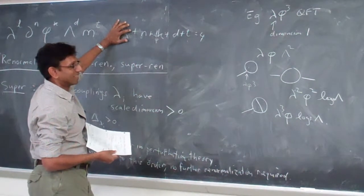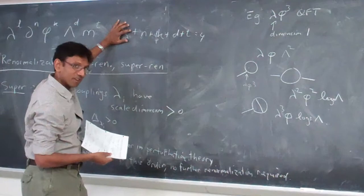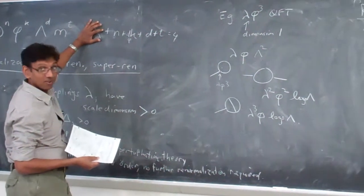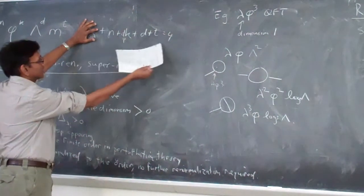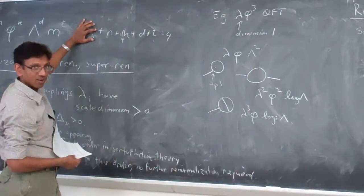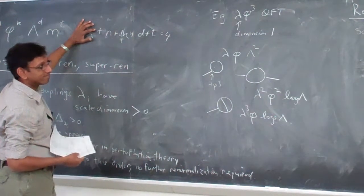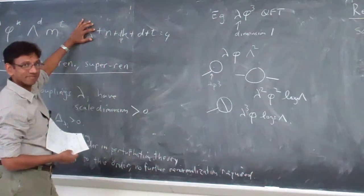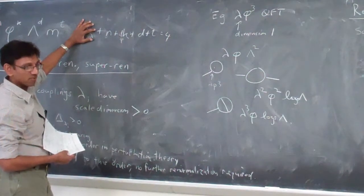Think about it — this is exactly what happened in phi-to-the-fourth field theory. Any power of lambda was allowed, but you could not argue that you would not get divergences at higher order. There's no theorem that says you don't get divergences in every order.